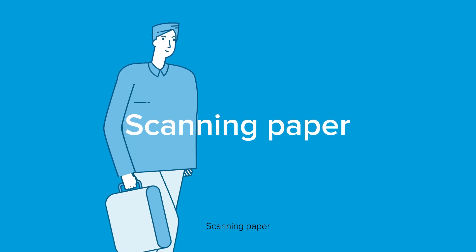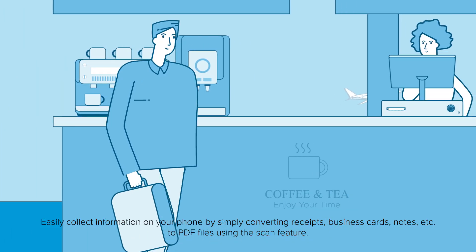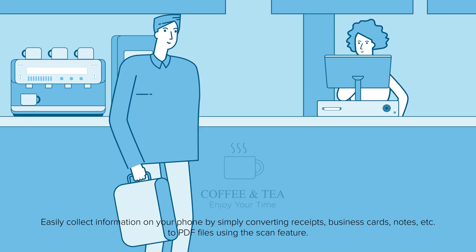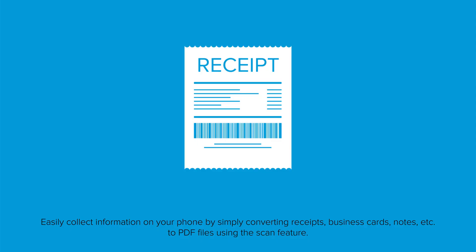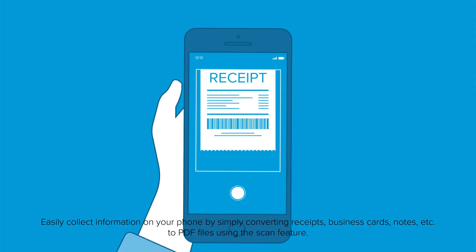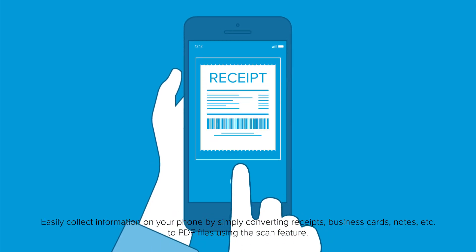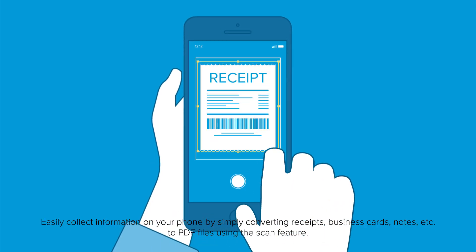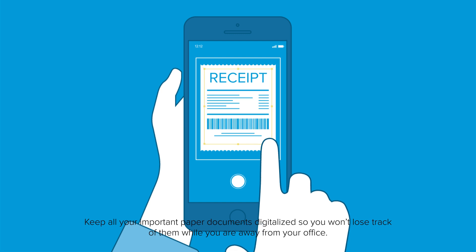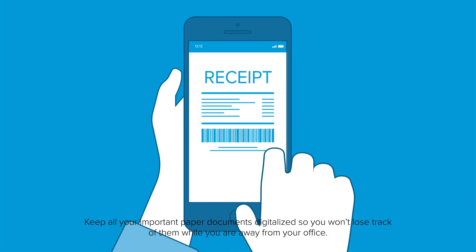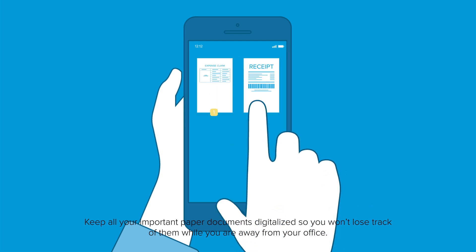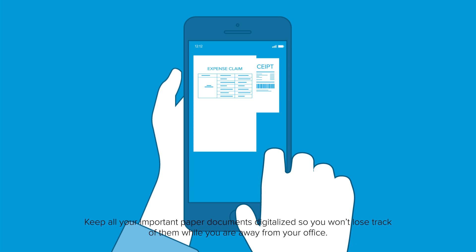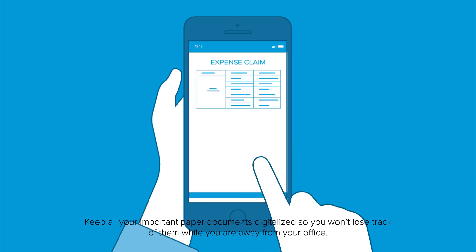Scanning paper. Easily collect information on your phone by simply converting receipts, business cards, notes, etc. to PDF files using the scan feature. Keep all your important paper documents digitalized so you won't lose track of them while you are away from the office.